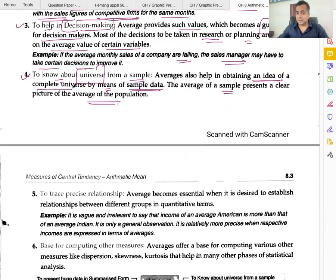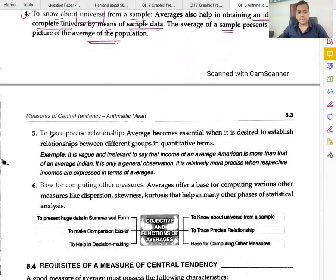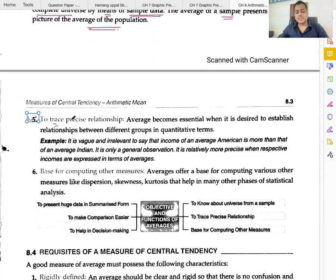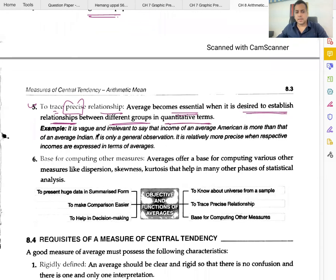Function five: to trace precise relationships. Average becomes essential when it is desired to establish relationships between different groups in quantitative terms. It is vague and irrelevant to say that income of an average American is more than that of an average Indian - it is only a general observation. It is relatively more precise when respective incomes are expressed in terms of averages.